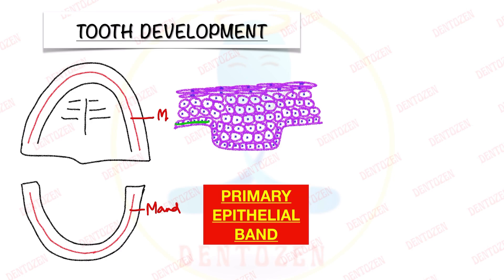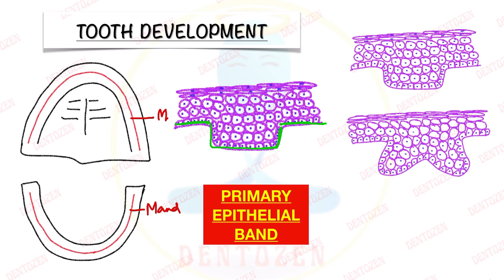The primary epithelial band was our oral epithelium, our oral ectoderm. This band will further divide into two layers. The inner layer is known as dental lamina — lamina means layer — and the outer layer is known as vestibular lamina. Vestibular lamina will become the vestibule, while dental lamina is the one that is going to form the tooth.